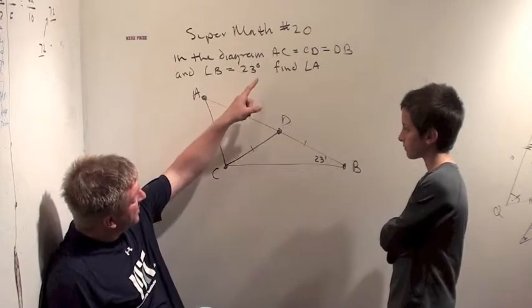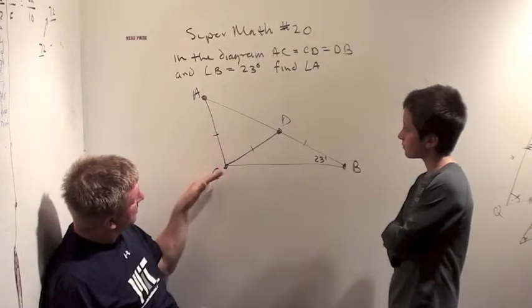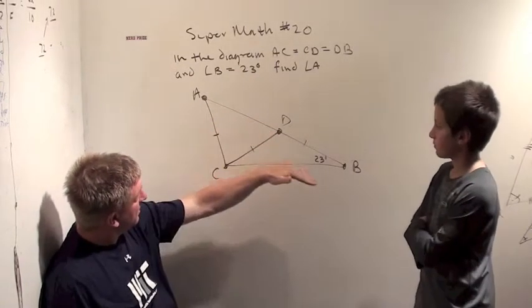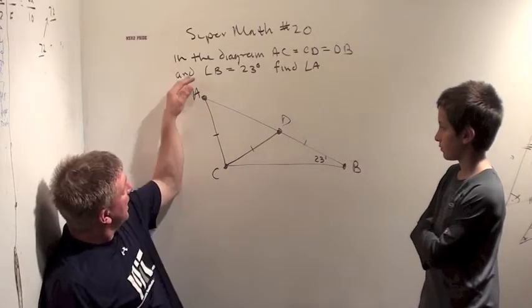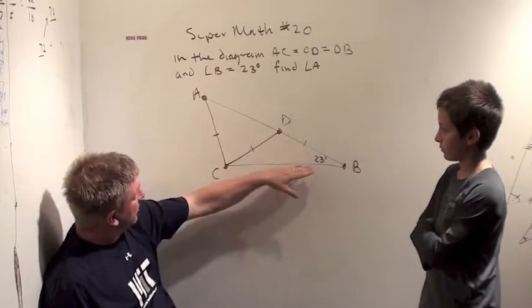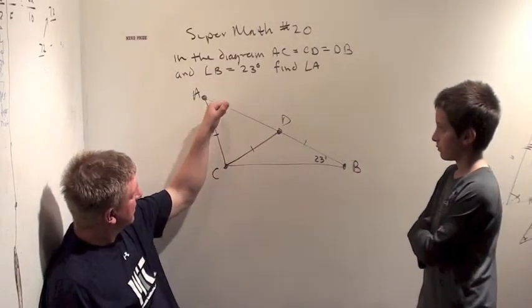In the diagram, AC equals CD equals DB. And angle B is 23 degrees. The question is, find angle A.